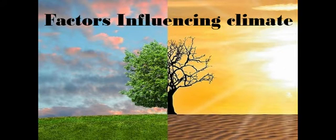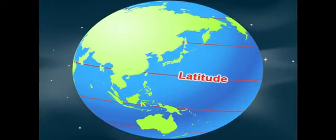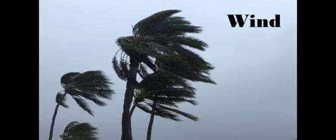Climate is influenced and controlled by certain factors like latitude or distance from the equator, altitude, humidity, precipitation, and wind.